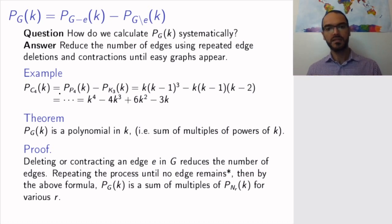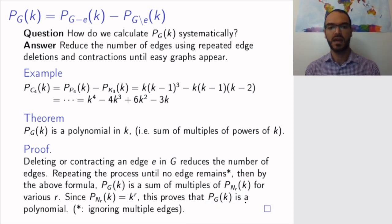So in the end, when we have 0 edges, we're going to have a bunch of null graphs, and each null graph has, as we saw, the P_G(k) is equal to k to the power r. So we're going to have sums of multiples of these things, and this proves that this is a polynomial.